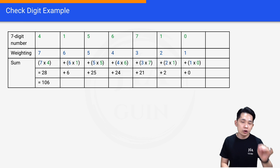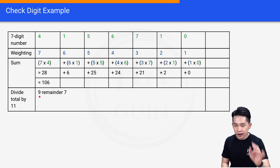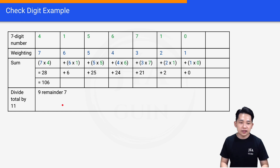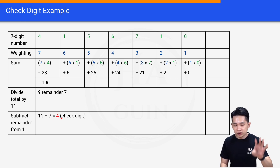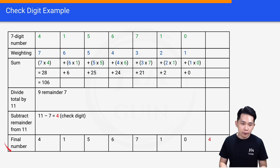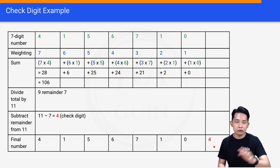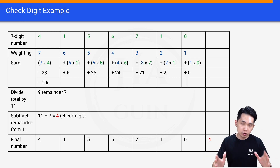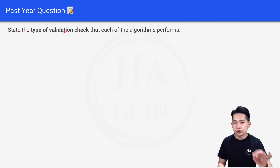The products are 28, 6, 25, 24, 21, 2, 0. Summing all these together gives 106. Dividing 106 by 11 gives 9 with remainder 7. Subtracting the remainder from 11: 11 minus 7 equals 4. So 4 is the check digit. The final number is the original seven digits with 4 appended as the last digit. This is how we compute the check digit for this seven-digit number.